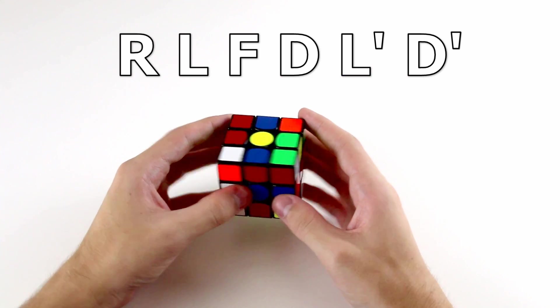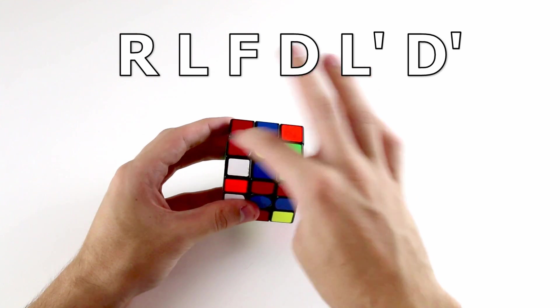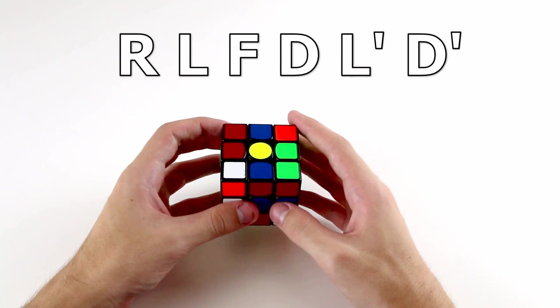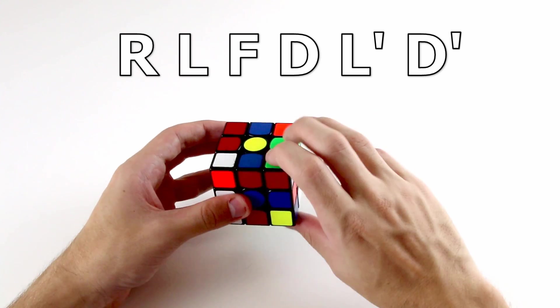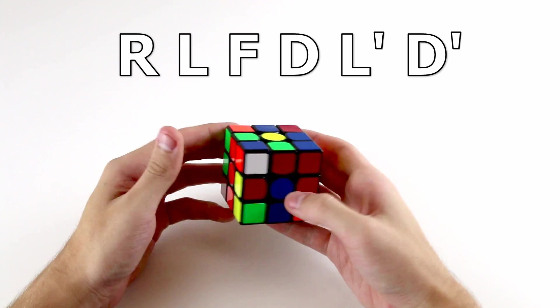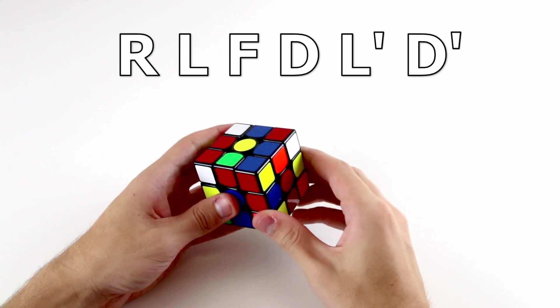And once you get even better at it, you'll be able to recognize in which orientation these two pieces will be so that you don't even need to look at solving your first F2L pair. But just for now, we do an R L F and these two pieces end up there, and the D L' D' doesn't affect the position of these pieces. And we can insert them straight away without even looking very much.